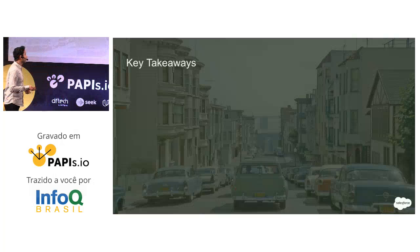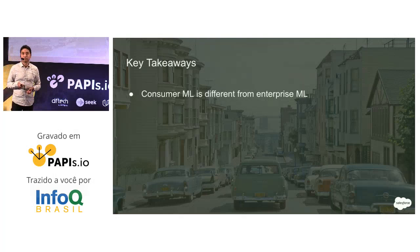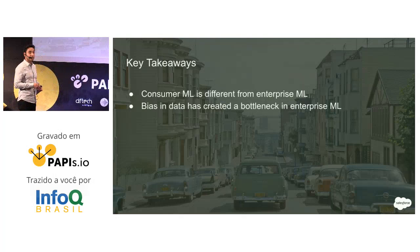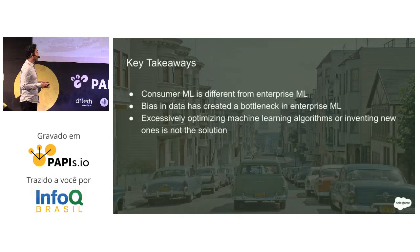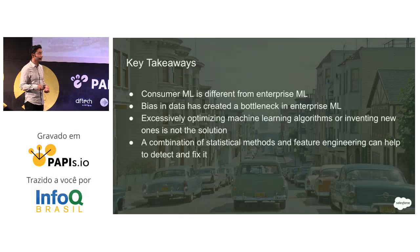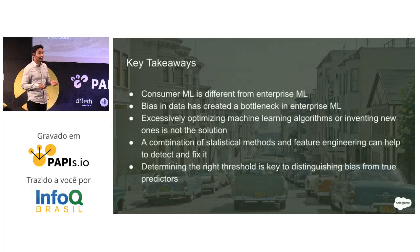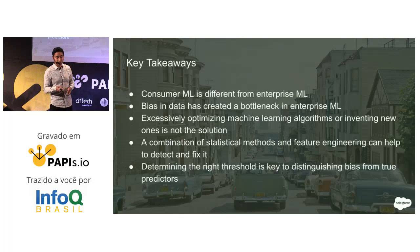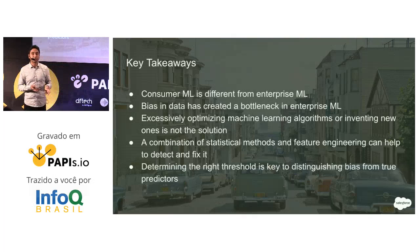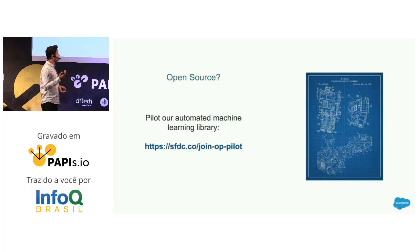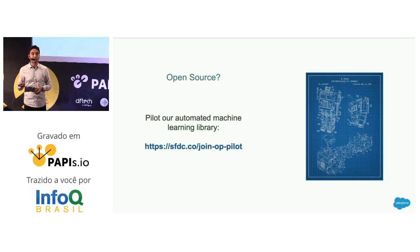The key takeaways: consumer machine learning is different from enterprise machine learning. Bias in data has created a bottleneck in enterprise machine learning, and you cannot solve it by excessively optimizing machine learning algorithms or creating new ones. A combination of statistical methods and feature engineering can help detect and fix it. And finally, determining the right threshold is key to differentiating a true predictor — a feature you want to keep — versus garbage you want to throw away. One thing people often ask: are we open sourcing this library? The answer is yes, we are planning to open source it. Right now it's in private beta — if you want access, you can go to the link and provide your GitHub handle.